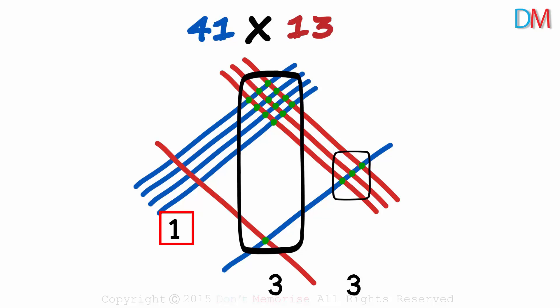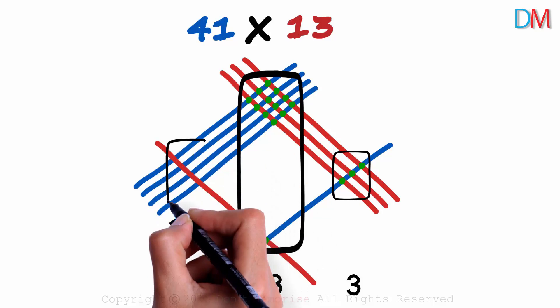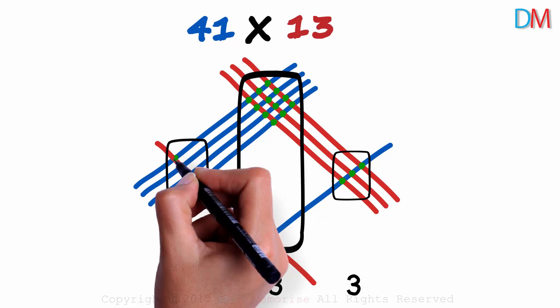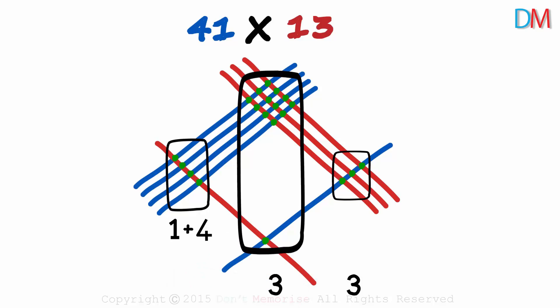Here, we carry the 1 over. And now we look at the final zone. There are four intersections. We add the 4 to the 1 that was carried over, and that gives us 5.